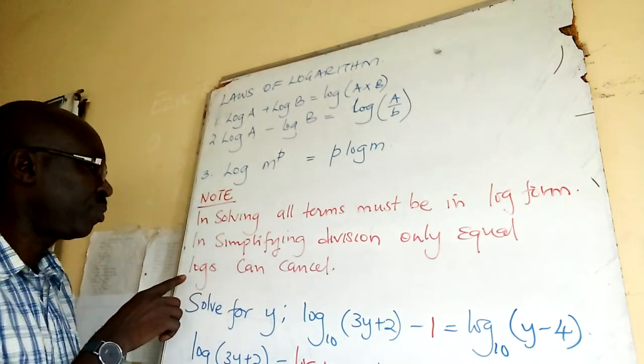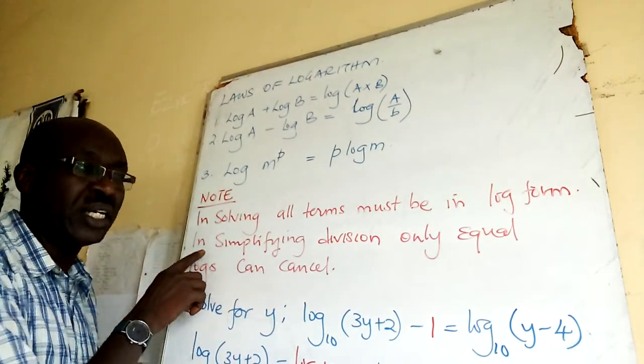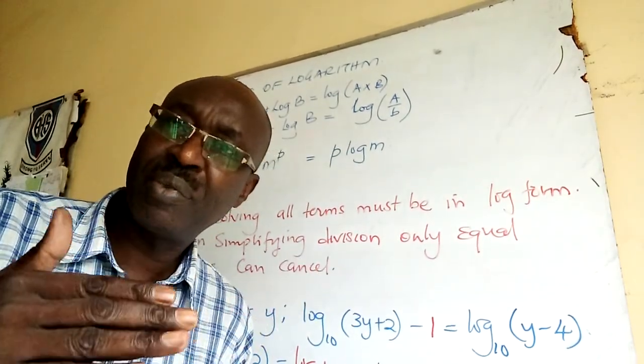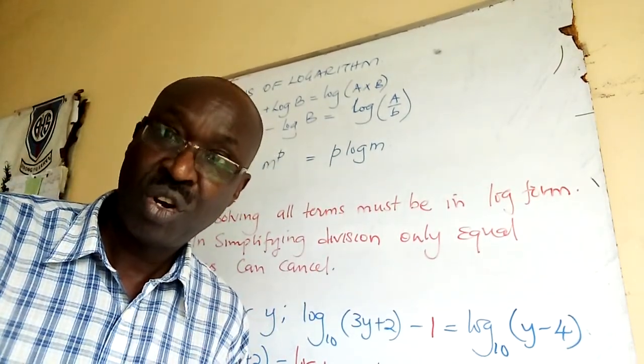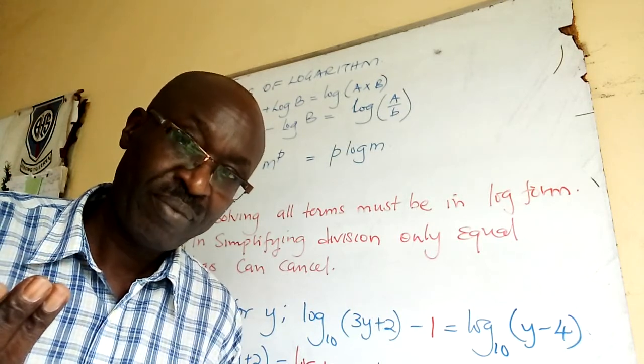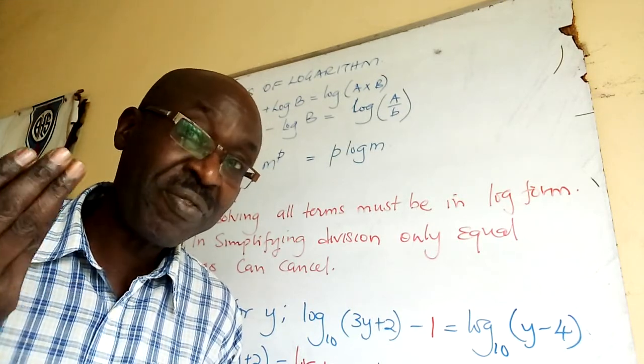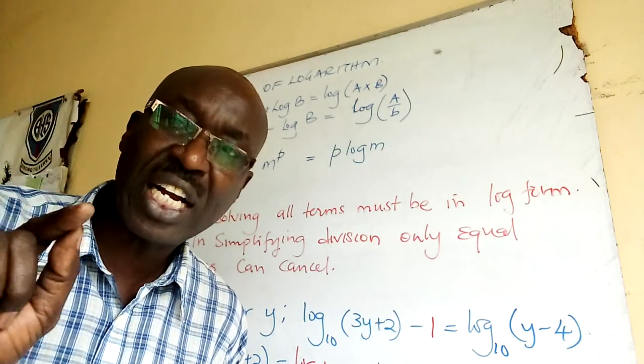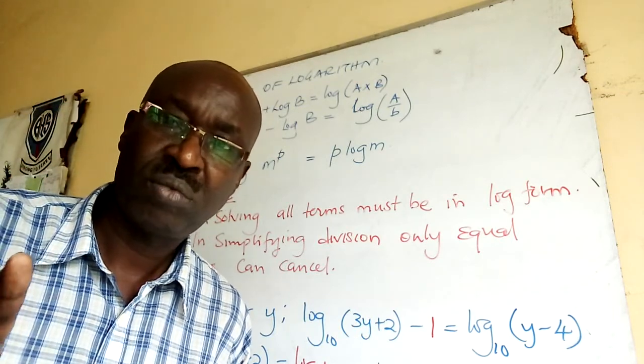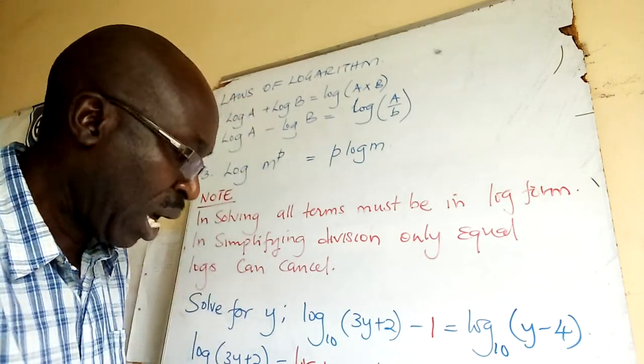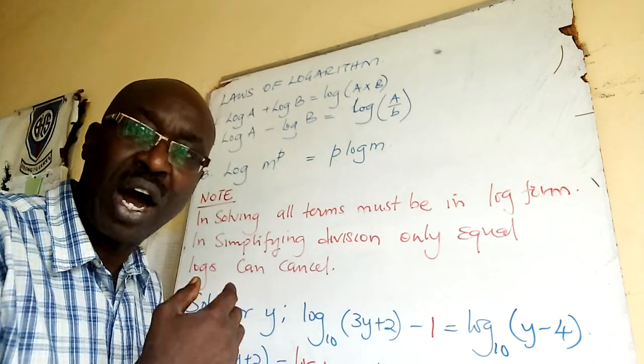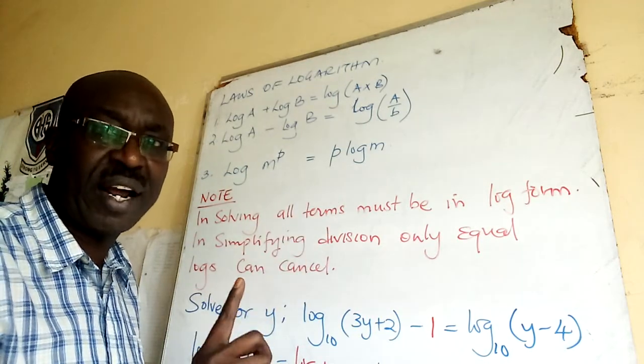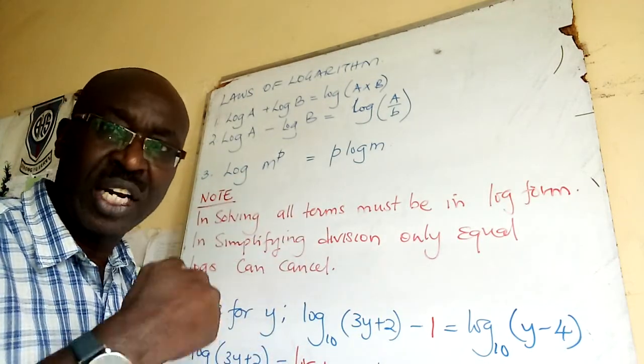In simplifying, if you are given a logarithm expression and you're told to simplify, when dividing log and log they can only cancel if they are equal. I want to show you one example. Very important here in red. For now I'll do one example, but the next lesson I'll do two.